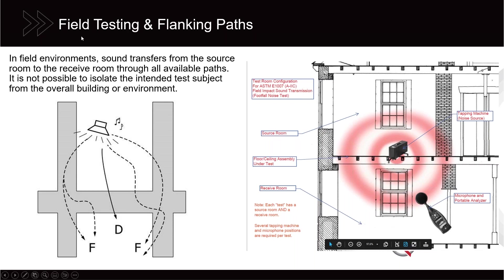One major challenge in the field is flanking paths. Your intended sound path — let's call it path D — is what you think you're testing, but you're actually testing D plus F, G, B, C, and all the other paths sound is taking from the source room to the receive room. It's actually very difficult to build a lab with a high level of sound insulation that prevents flanking paths, and that situation is very rarely present in the field. Unless you have something like a low-performing door with a high-performing wall, flanking paths are part of what you're testing — both intended and unintended.